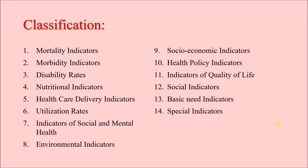There are different kinds of health indicators. This list is taken from Park's textbook, which is the standard textbook for undergraduate and postgraduate students. The different indicators are: mortality indicators (different death rates), morbidity indicators, disability rates, nutritional indicators (nutritional status of the population), health care delivery indicators (utilization rates — how much health services are being used), indicators of social and mental health, environmental indicators, socioeconomic indicators, health policy indicators, indicators of quality of life, social indicators, basic indicators, and special indicators.